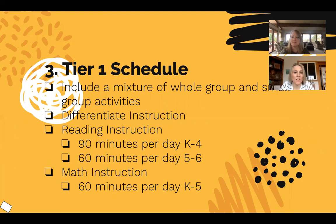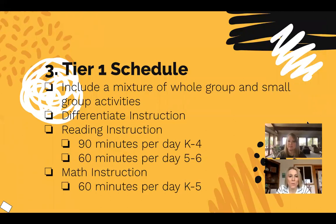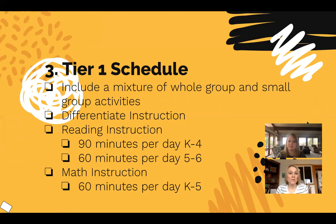Now we're going to talk about each tier's schedule according to the MTSS tiers. For the Tier 1 schedule, it should include a mixture of whole group and small group activities, and differentiate that instruction. Here are some recommended minutes for reading instruction: 90 minutes per day for K through 4, 60 minutes per day for grades 5 through 6. In math, 60 minutes per day for K through 5.